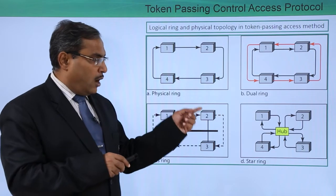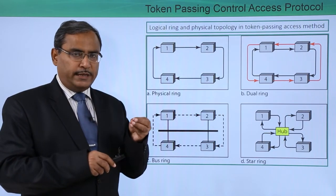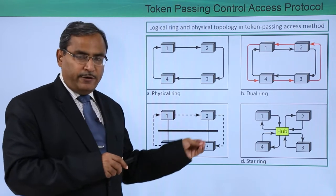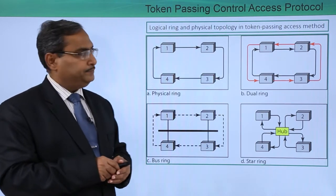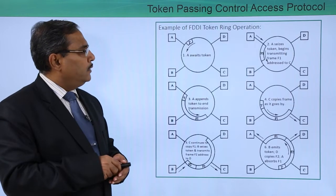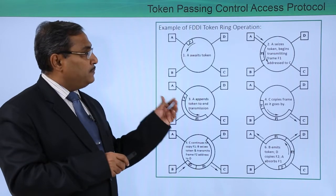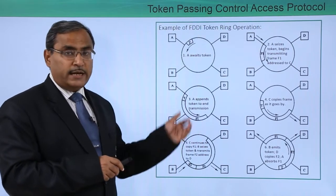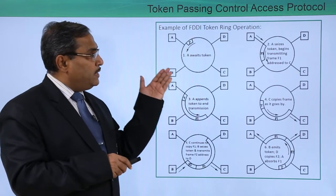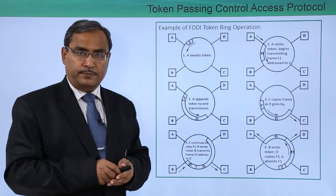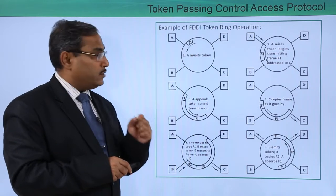The token can be managed so that each and every node will get a fair chance to transmit its data. Now let us discuss FDDI, that is Fiber Distributed Data Interchange. That is the example of FDDI token ring operation.